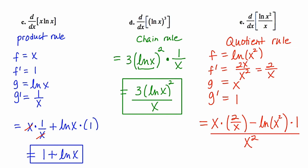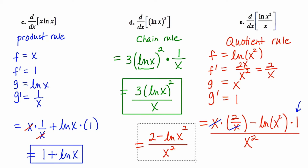Certain things are going to cancel out, which will make this look cleaner. The x and the x cancel out, and multiplying by 1 isn't very impactful. So our final answer is 2 minus the natural log of x squared, all over x squared. Scanning to see if I can simplify further — I can't, so I'll leave it like that. This slide illustrated the product rule, the chain rule, and the quotient rule. Let's go on to slide number 3.